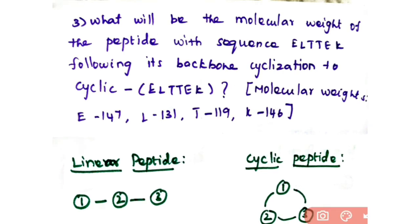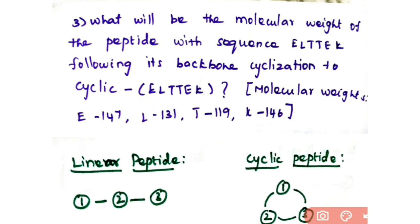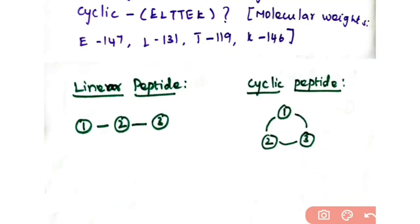The third problem: what will be the molecular weight of the peptide with sequence E-L-T-T-E-K following its backbone cyclization to cyclic E-L-T-T-E-K? In the previous two problems we calculated the molecular weight of linear peptides; now we will see how to calculate the molecular weight of a cyclic peptide. The molecular weights are: E = 147, L = 131, T = 119, K = 146.